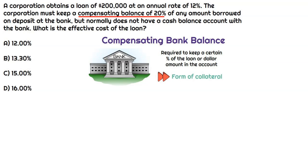When a lender says you have to keep a certain percentage of the loan in the bank account, as a borrower, that's money that I actually can't use. If it has to stay in the bank account, that sounds like a form of collateral. So even though the loan is for $200,000, the actual amount of money that I can use isn't $200,000. The question is about the effective cost of the loan — we're paying 12% interest on $200,000, but we actually don't have the full $200,000 to use. So we'll go through four steps and calculate the effective interest rate or cost of the loan.